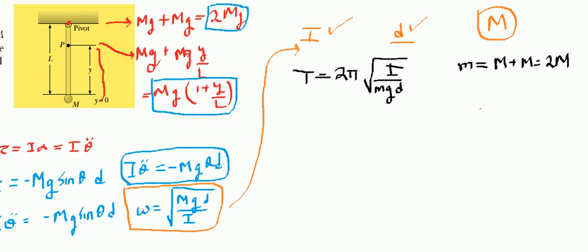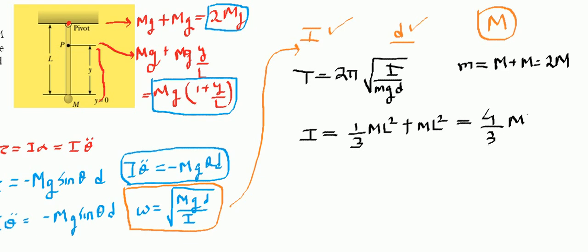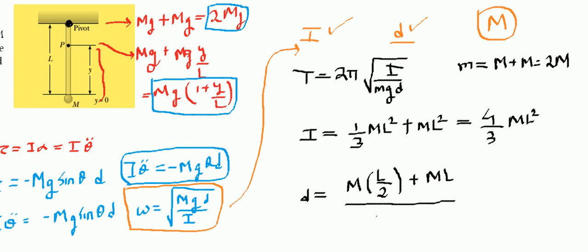The moment of inertia is the sum of the moments of inertia of the ball and the rod. The moment of inertia of the rod about the pivot is (1/3)ML², and the moment of inertia of the ball about the pivot is ML². Together this gives (4/3)ML². This is calculated from the pivot point. For the center of mass: (M × L/2 + M × L) divided by total mass 2M, which gives D = 3L/4.